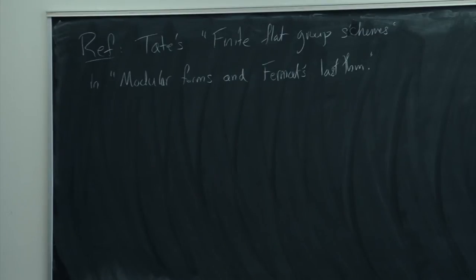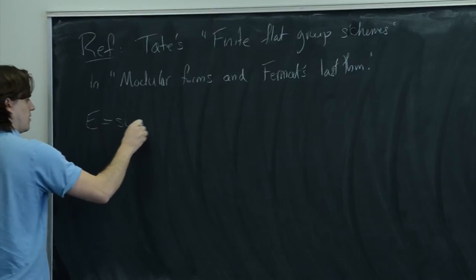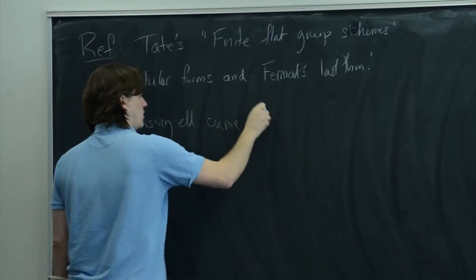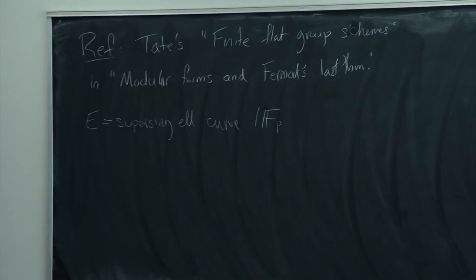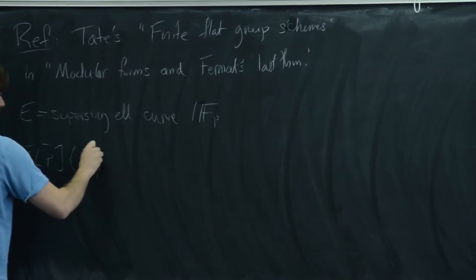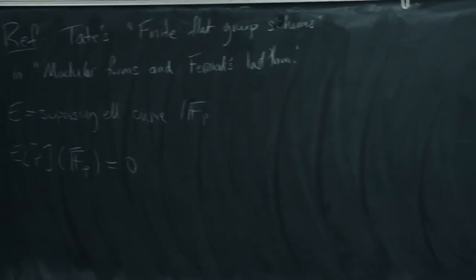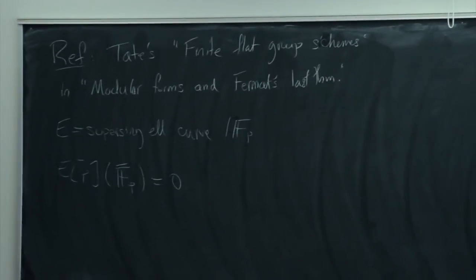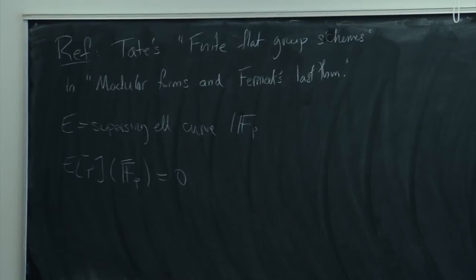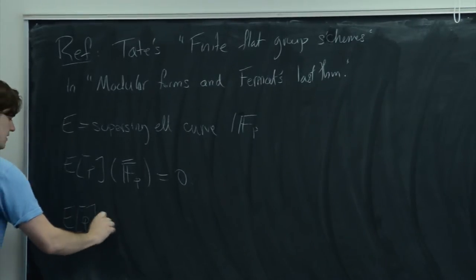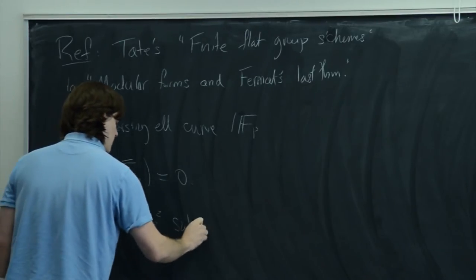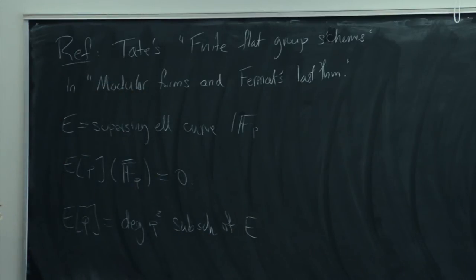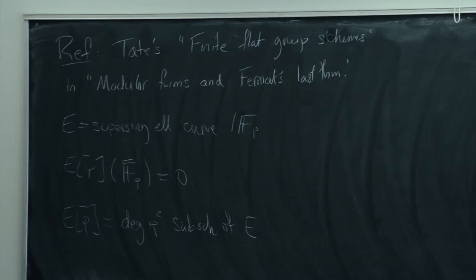So why are we interested in group schemes? If E is a supersingular elliptic curve over F_p, then if you look at its p-torsion, it has no F_p-bar points. By taking the F_p-bar points you get a Galois representation, but it's completely trivial — it's zero. But E[p] is a degree p-squared subscheme of E, so there's a lot there in the subscheme; you just can't see it at the level of points. It's a sub-group scheme because it's the kernel of a group endomorphism. So this is an example of a group scheme that's interesting — you can't study it by studying points, but it's still there and important.